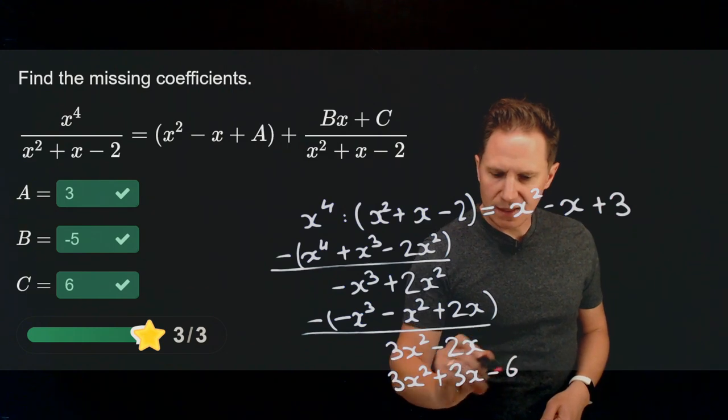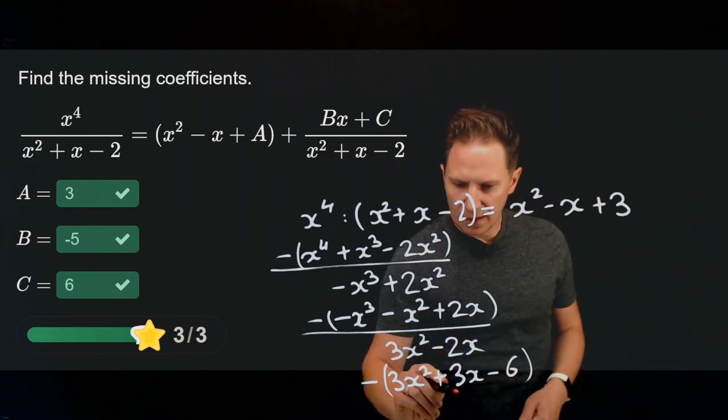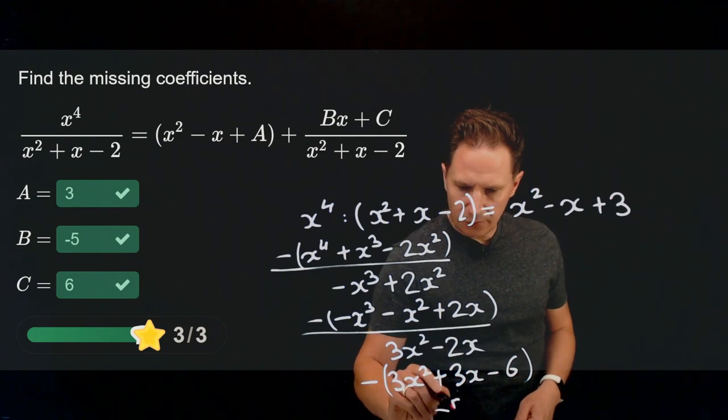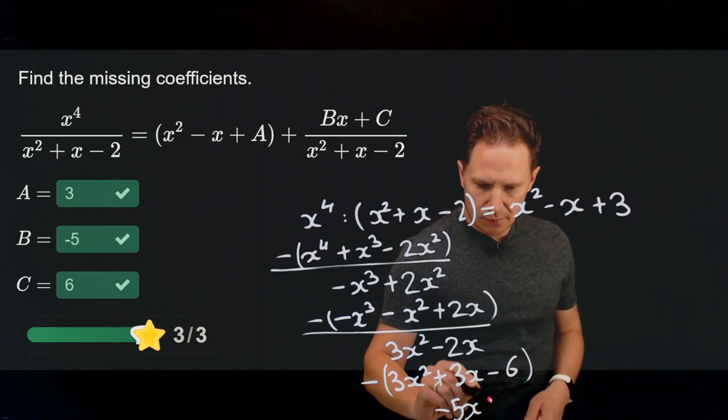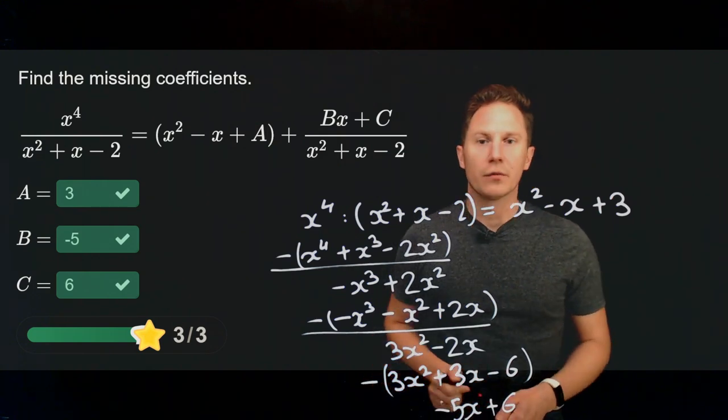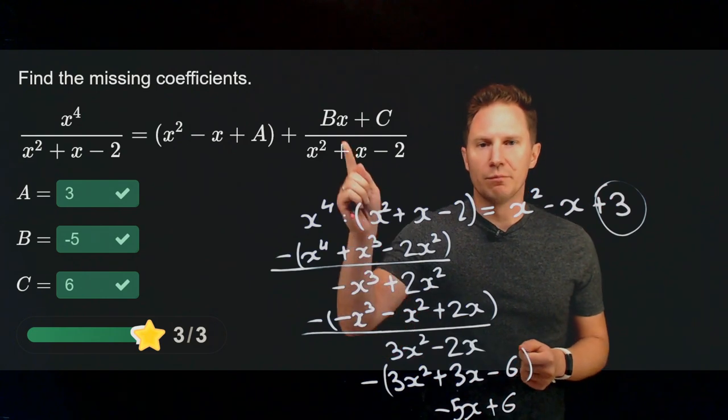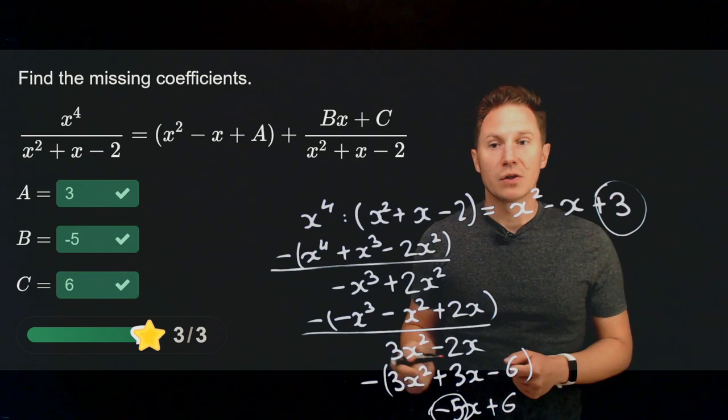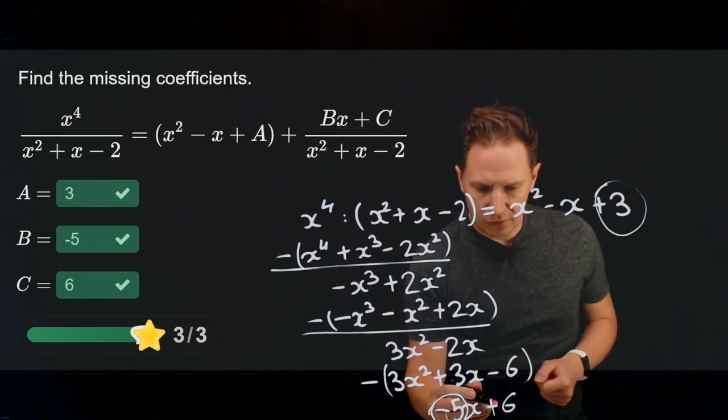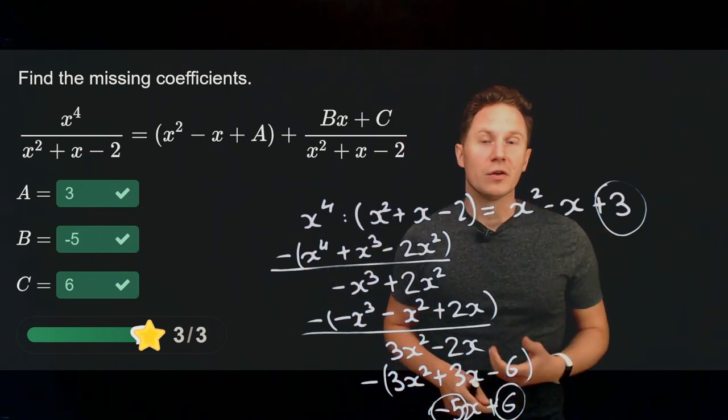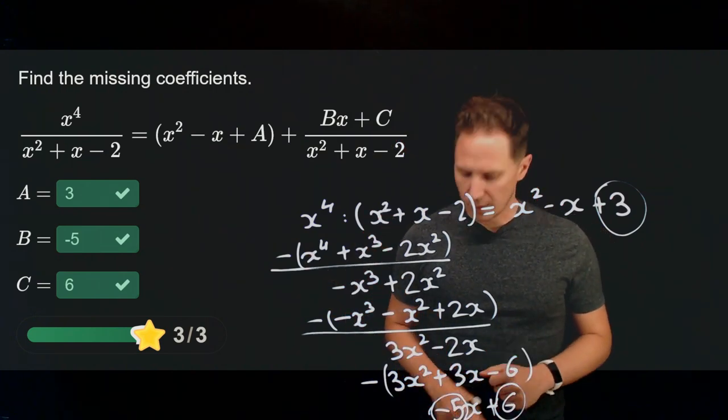This divided by the denominator, 3x squared by x squared gives us plus 3. We check the remainder: 3 times x squared is 3x squared, 3 times x is 3x, and 3 times negative 2 is negative 6. Subtracted from that gives us negative 5x plus 6. Therefore the coefficient A is 3, the coefficient B is negative 5, and the coefficient C is 6. I hope you enjoyed this video and I'll see you in the next one.